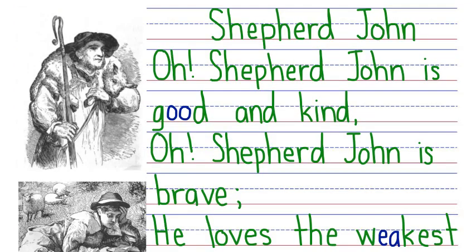Lastly, let's look for the DGE phonogram in a poem titled 'Shepherd John' from the book Rhymes and Jingles. With green letters I've written the phonograms you already know. With blue letters I've written phonograms we haven't covered yet. As we read, look for the word with the DGE phonogram.